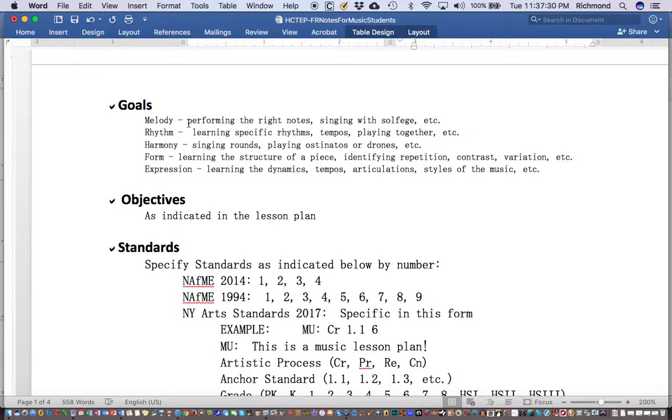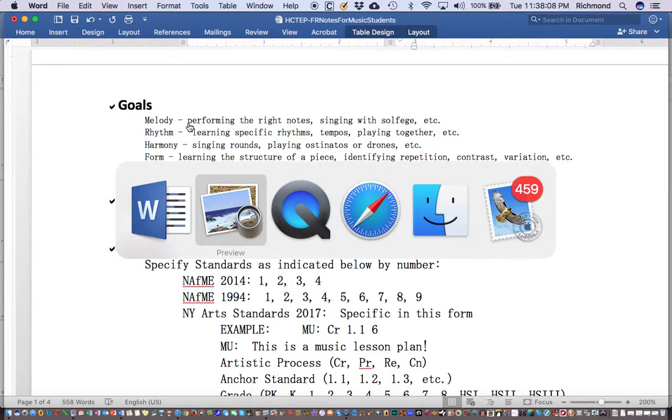If you're talking about dissonant and consonant harmony, if you're talking about major or minor chords, then that vocabulary would make its way into your goals. The same thing is true of form, which is the structure of a piece. And the same thing is true of expression, where you would be teaching the students about dynamics, tempos, articulation, styles of the music, and so on. Every music teacher should be explaining what their specific musical goals are going to be: melody, rhythm, harmony, form, and expression, and any academic vocabulary that's going to be used should be incorporated into that.